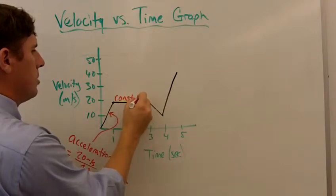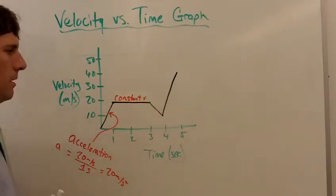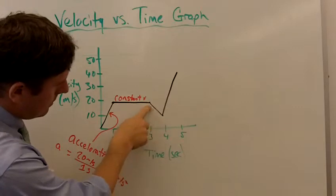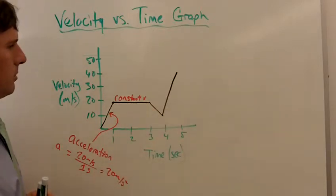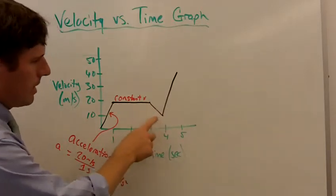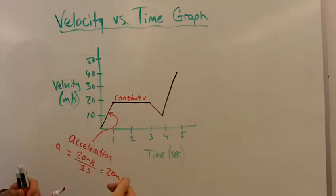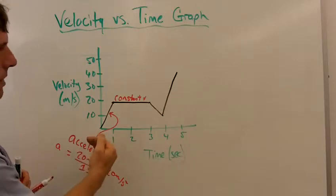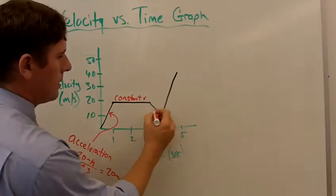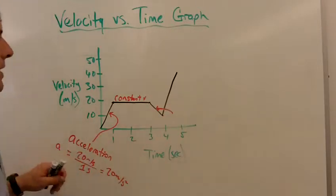How about this downward slope graph here? Well, this line would mean in a distance versus time graph this would mean that the object is returning backward toward the observer, getting closer to the observer or wherever its starting point was. But in this case right here, that's not what it means.